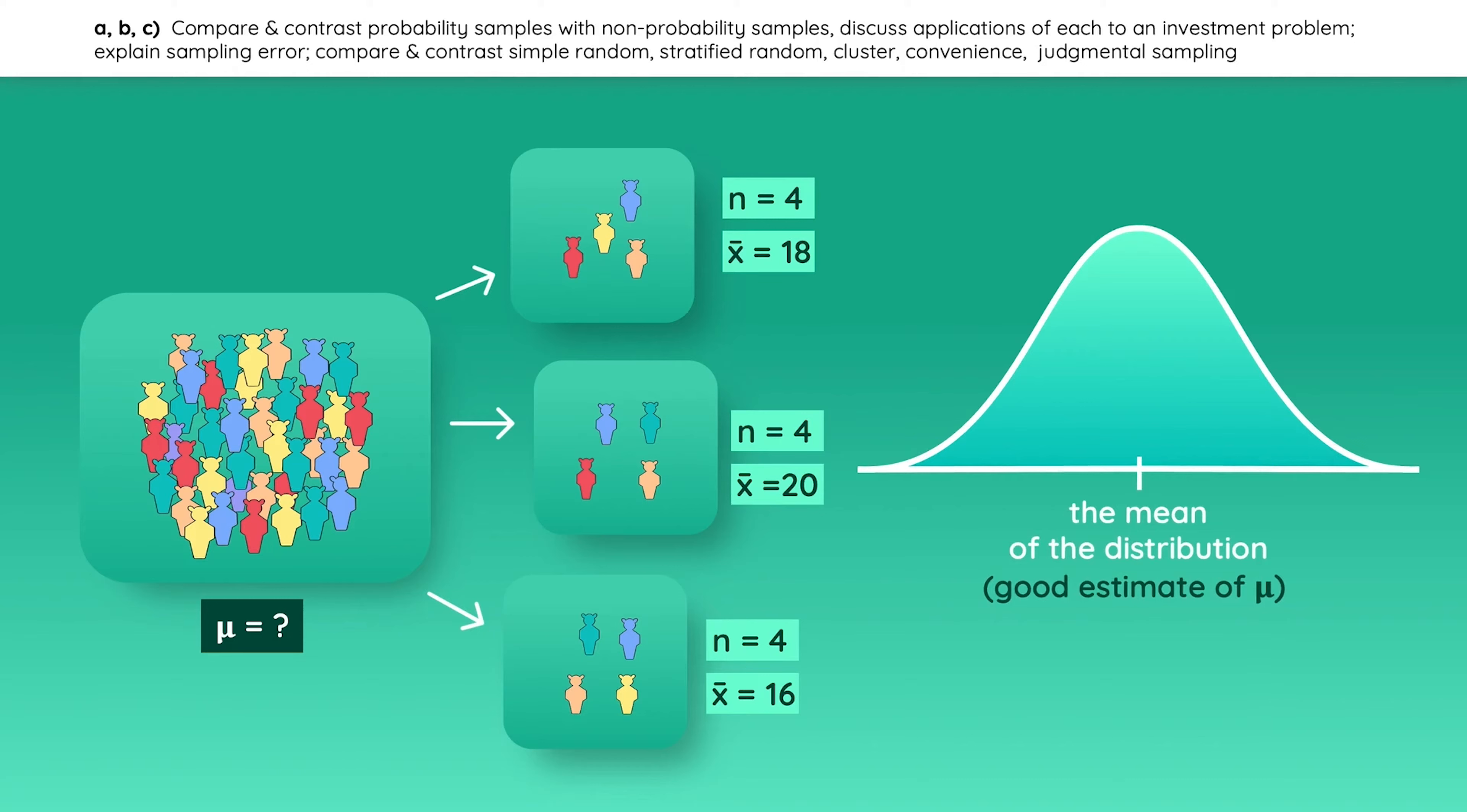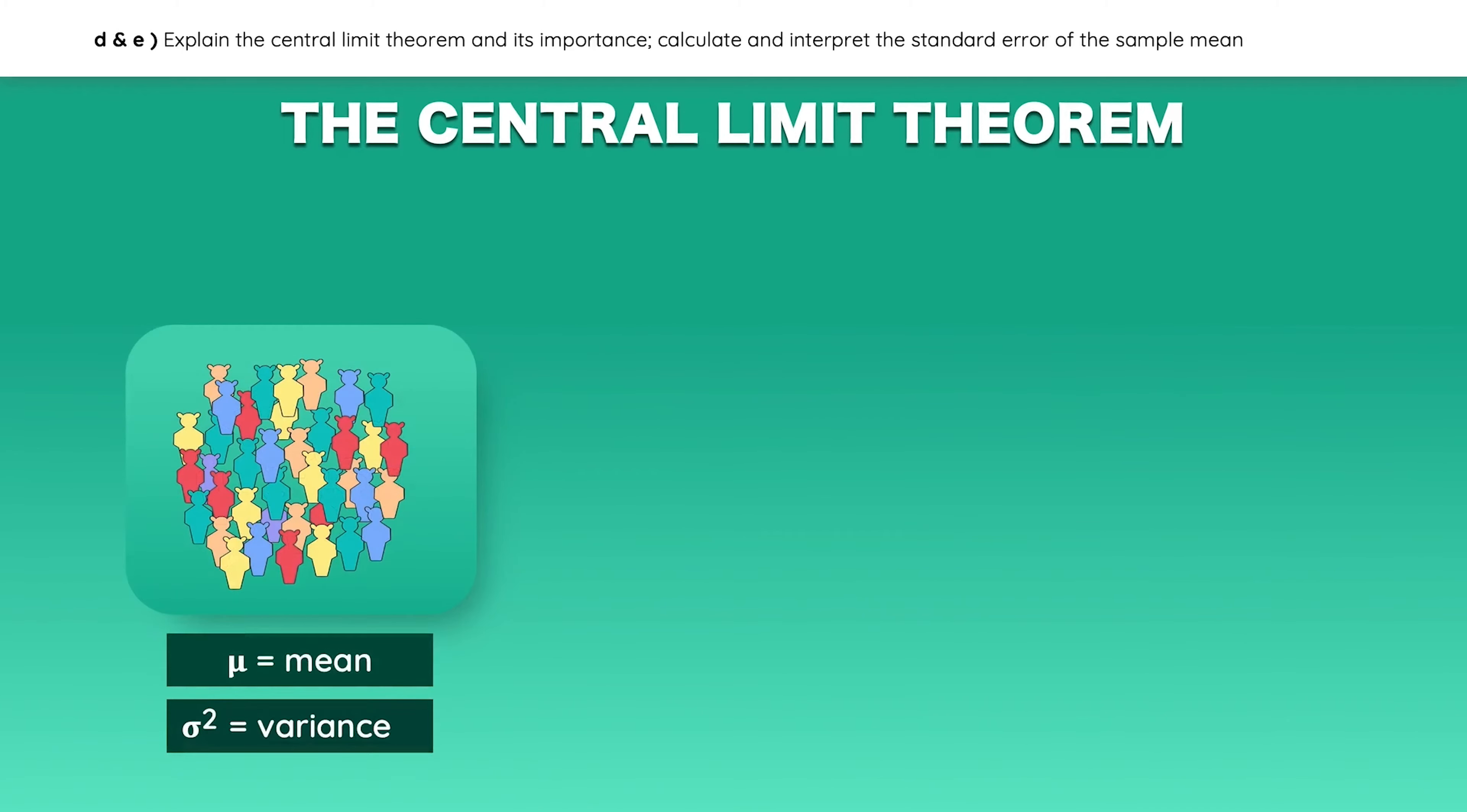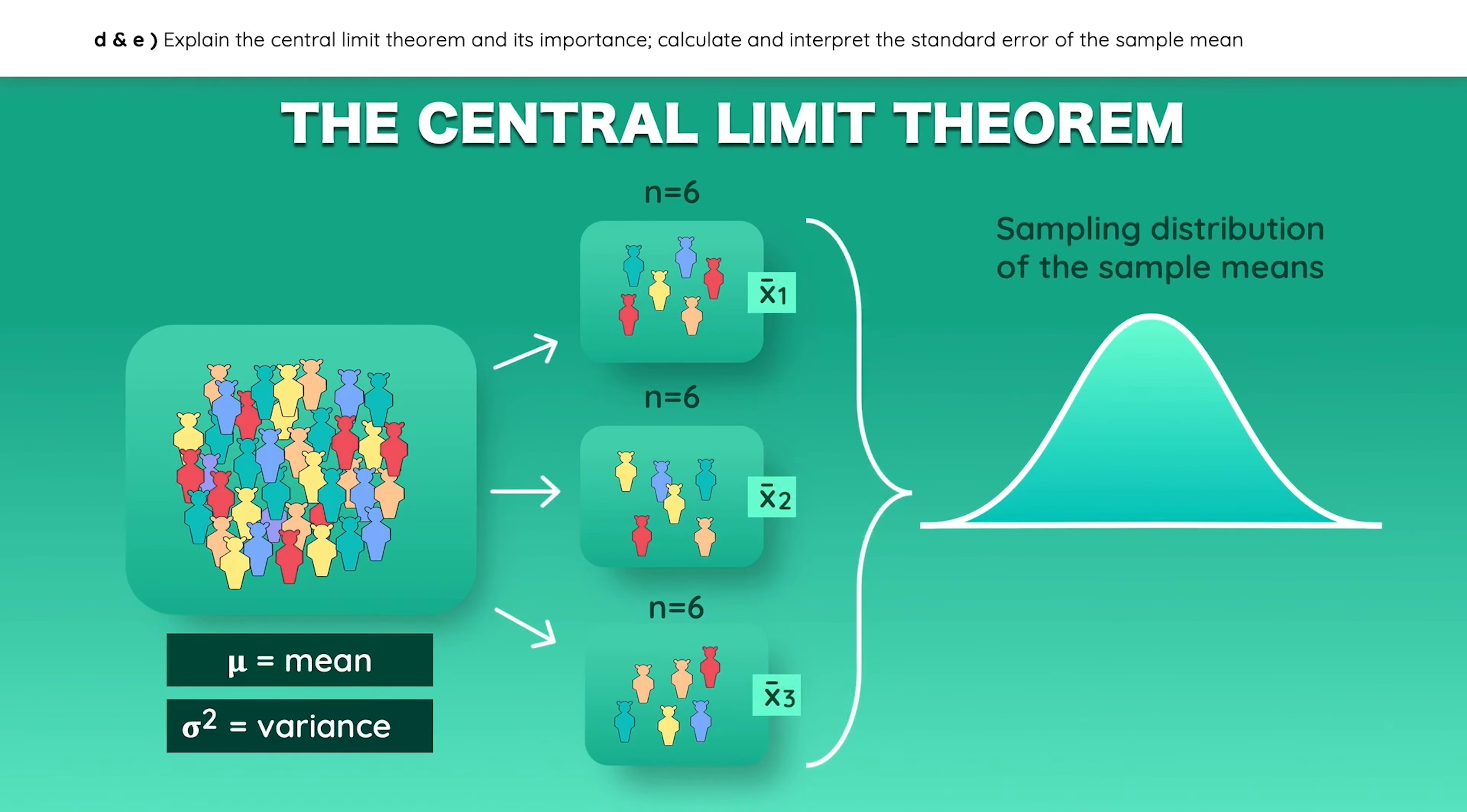What we just described is essentially the central limit theorem, so let's go over it. The central limit theorem states that if you have a population with mean μ and variance σ² and you take samples of size n, then the sampling distribution of the sample means will be normally distributed. It doesn't matter if the initial population was not normally distributed, the sample distribution will be normal.